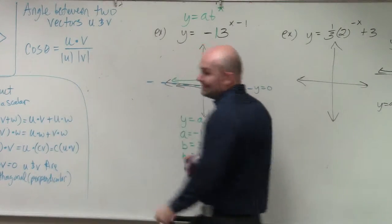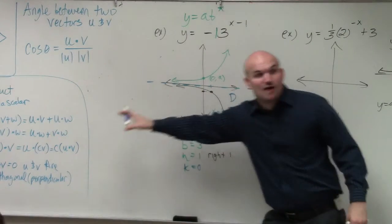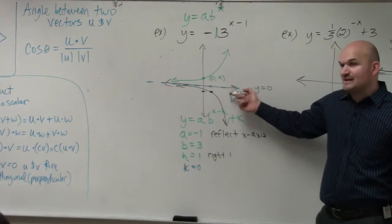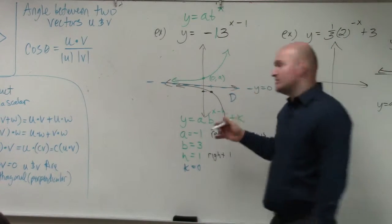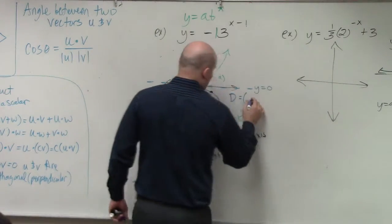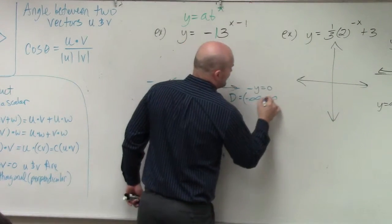So the domain, again, is how far the graph is going to the left, how far it's going to the right. That's not affected by the horizontal asymptote. So therefore, you get negative infinity to infinity.